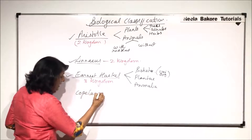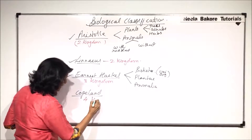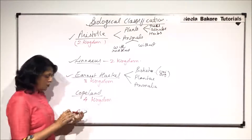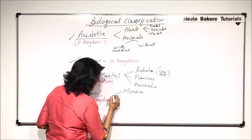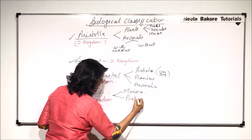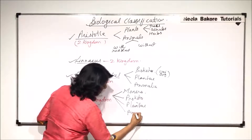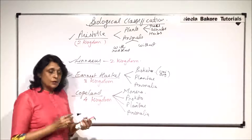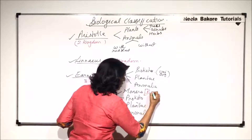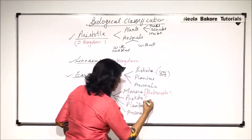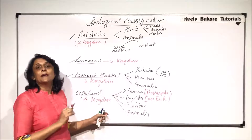Then Copeland gave a four kingdom classification where a new kingdom was added: Monera. So the four kingdoms were Monera, Protista, Plantae, and Animalia. This was the first time prokaryotes and eukaryotes were separated — Monera included prokaryotes and Protista included unicellular eukaryotes. It was an even better classification.